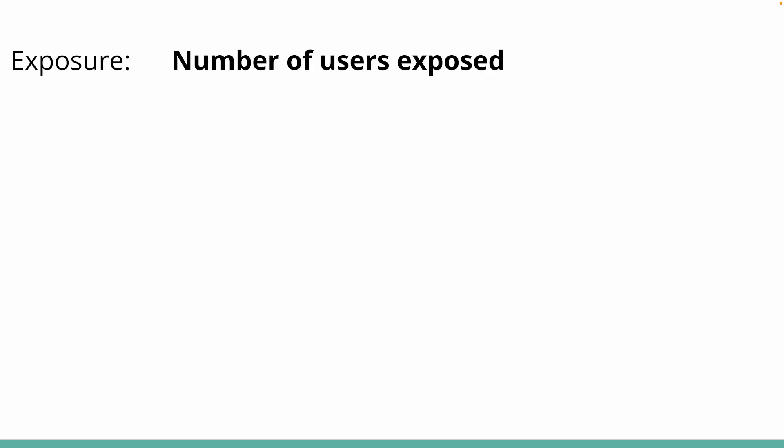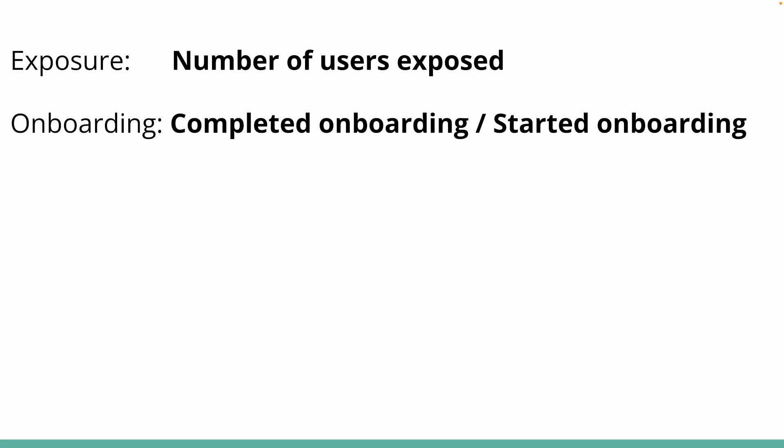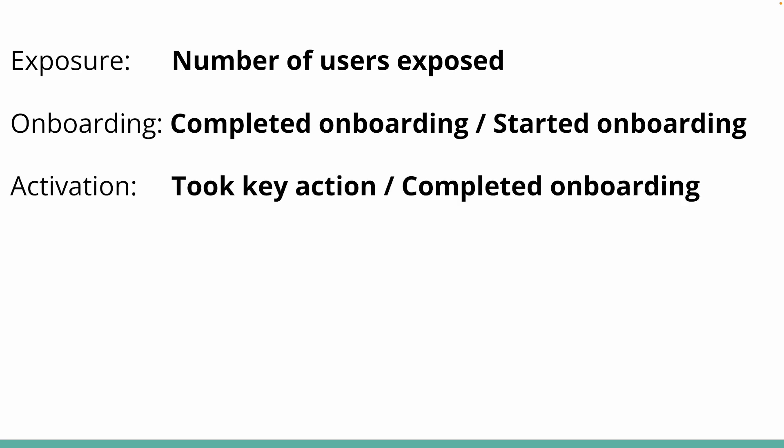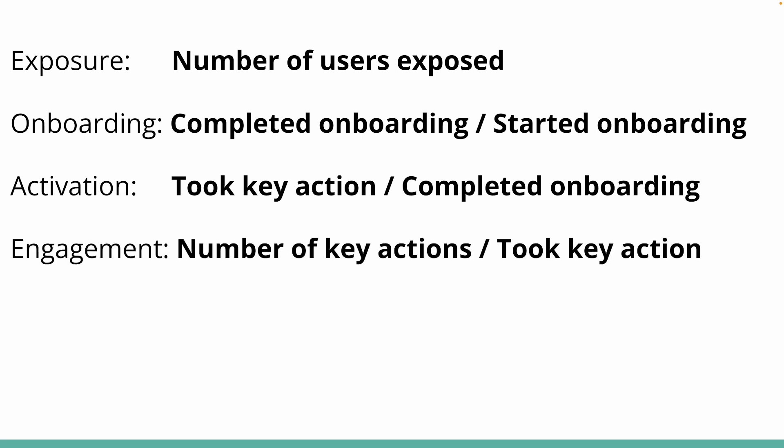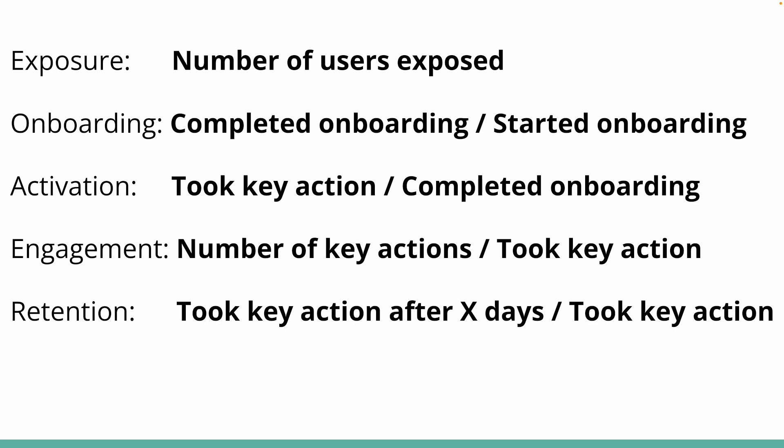To recap: we have exposure, which is the number of people who got exposed to your product. We have onboarding completion, which is the number of users who completed onboarding divided by those exposed or those who started onboarding — this metric is optional. Then activation rate, which is the number who took a key action divided by the number at the prior key point. Next is engagement, defined as the number of key actions divided by the number of active users. And last, retention, which is the number of people who continue to take key actions after a fixed amount of time divided by those who activated. All of these roll up to the focus metric — your number of active users. I highly recommend taking a screenshot of these slides and keeping them handy as a reference.